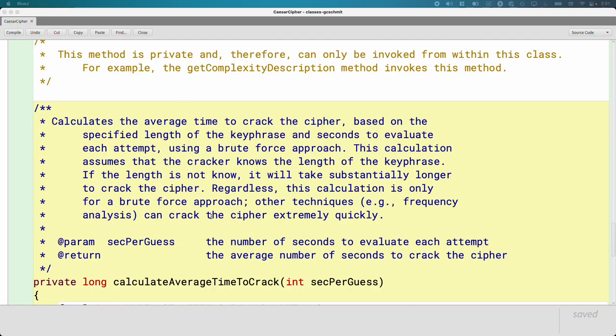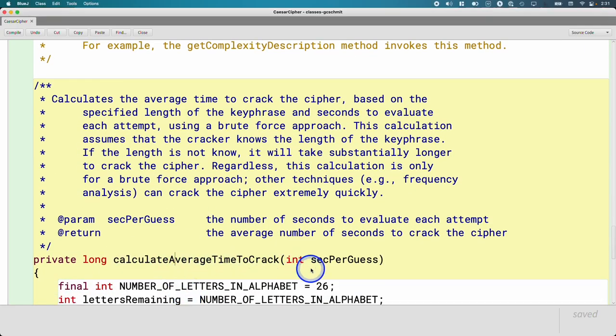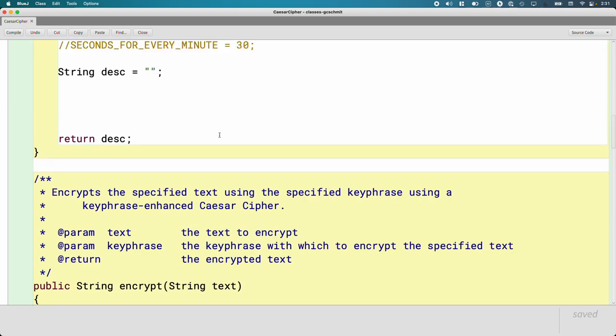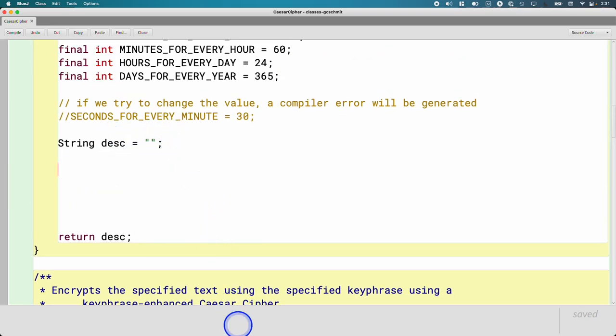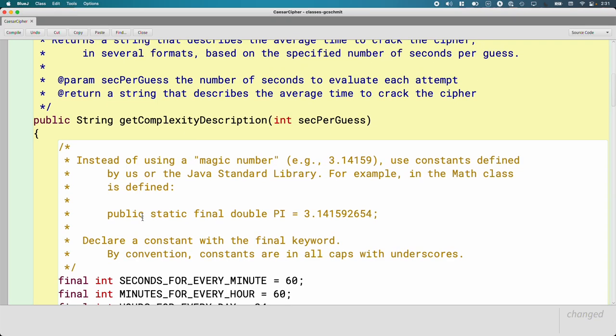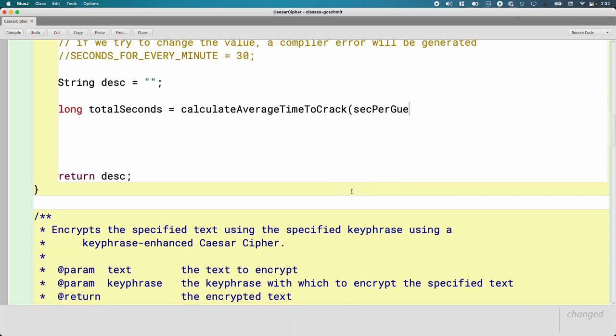There's already a method in this class written for us called calculateAverageTimeToCrack. It takes a single parameter, which is the seconds per guess, and it returns a value as a long because it might be more than 2 billion seconds. We can use this method to help us create this description. Going back up to where we left off, we can actually call that other method. I'm going to create a local variable of type long called totalSeconds and call the method calculateAverageTimeToCrack, passing sec per guess.